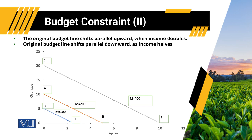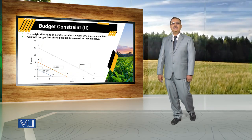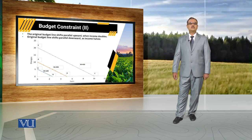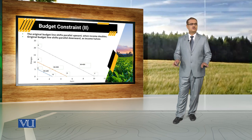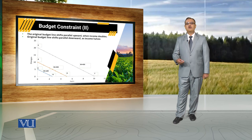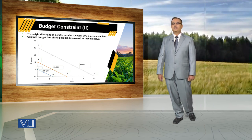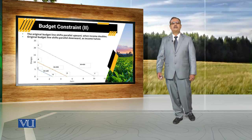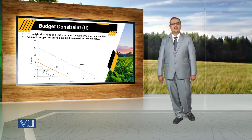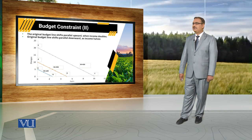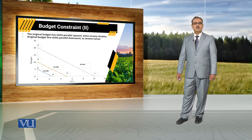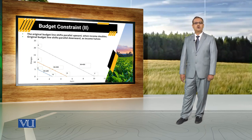For example, in this diagram, if we take income of the consumer equal to 200 rupees, then all different combinations of apples and oranges that a consumer can afford are denoted by budget line AB. If we assume there is an increase in income of the consumer, keeping prices of commodities constant, and income becomes double to 400 rupees, the consumer can purchase double the quantities of both commodities, denoted by budget line EF.